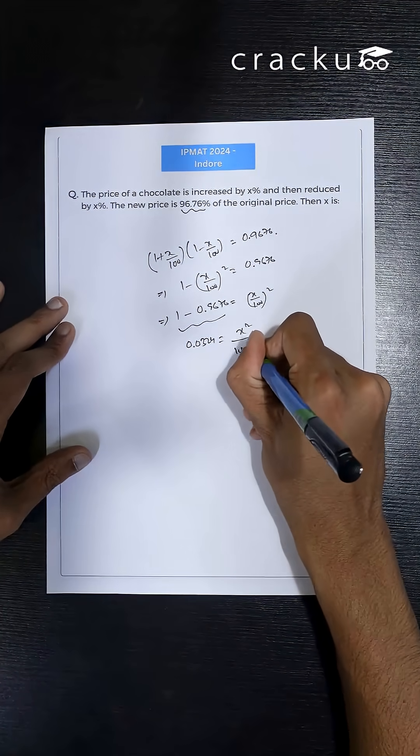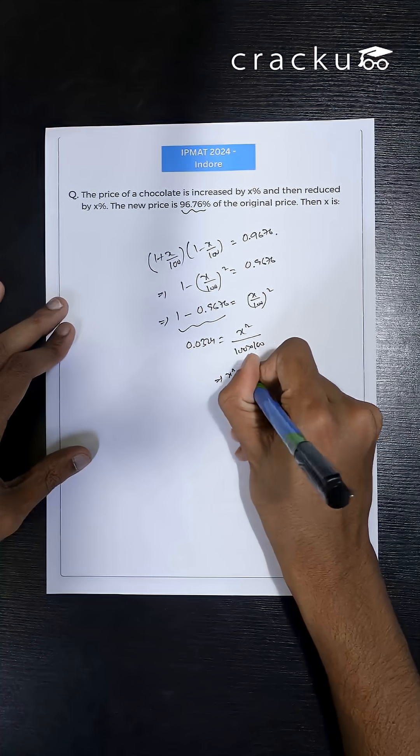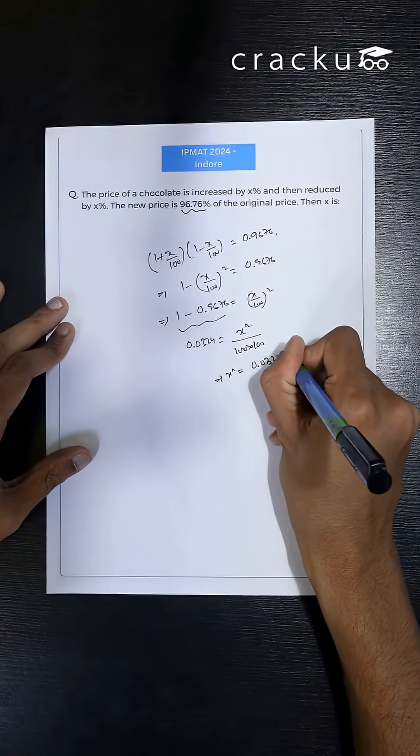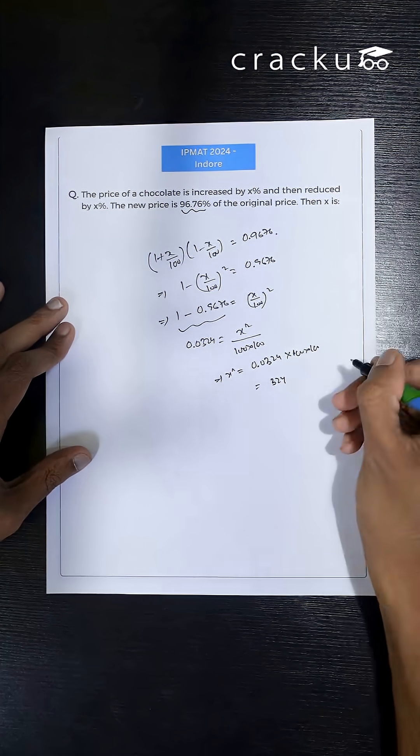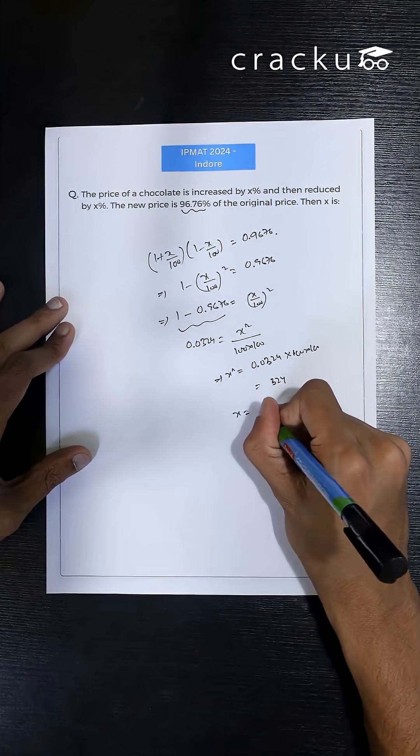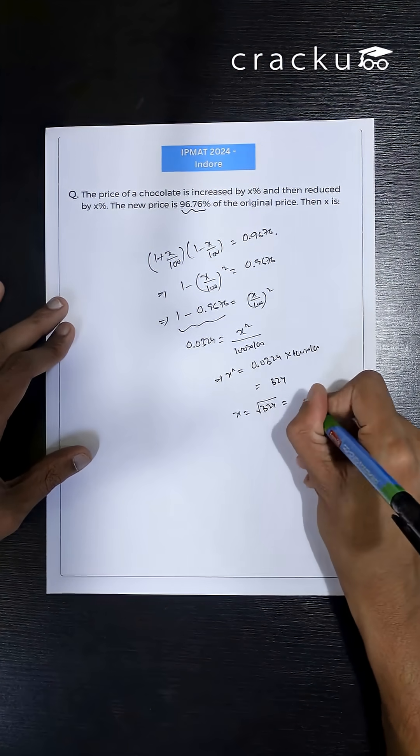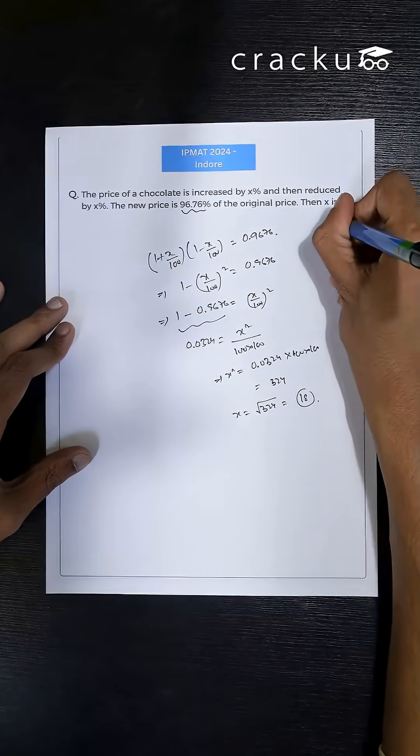This equals to x square by 100 into 100. So x square I can write as 0.0324 into 100 into 100, which is nothing but 324. So x square is 324. So x I can write as root 324, which is 18. So the value of x is 18.